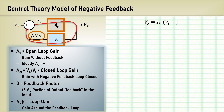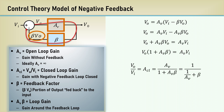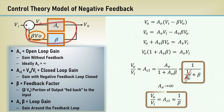Let's write the loop equation for the output voltage: it's A sub V times the input voltage minus the product of beta times the output voltage, per the diagram. This equation is rearranged to show the ratio of the output voltage to the input voltage, which is the closed loop gain. If we make the assumption that the open loop gain is near infinity, the term 1 over A sub V becomes 0, and the closed loop gain is simply 1 over beta.